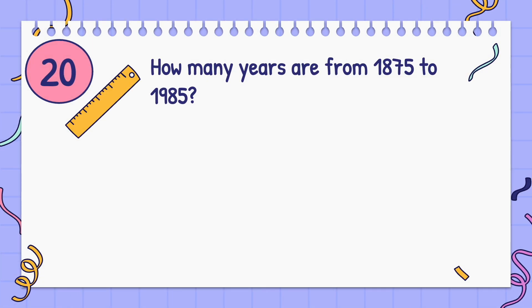How many years are from 1875 to 1985? Answer: 110 years.